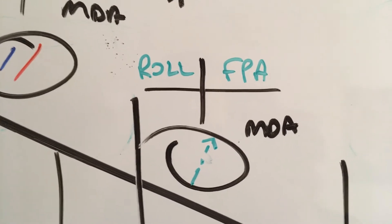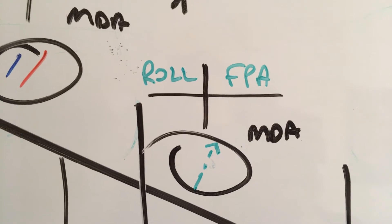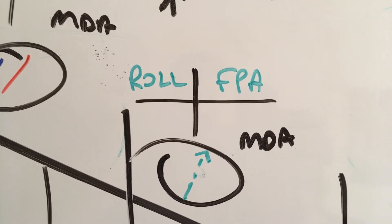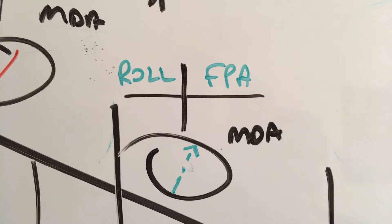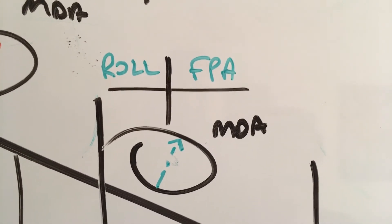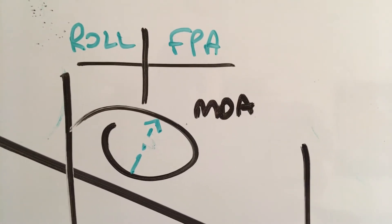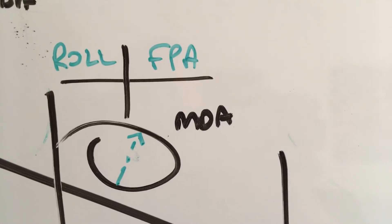We happen to like FPA because that allows us for a constant angle all the way into the approach. Either to the point where we disconnect the automation and fly it in, or we allow the aircraft to capture altitude and then fly to the missed approach point and go around.